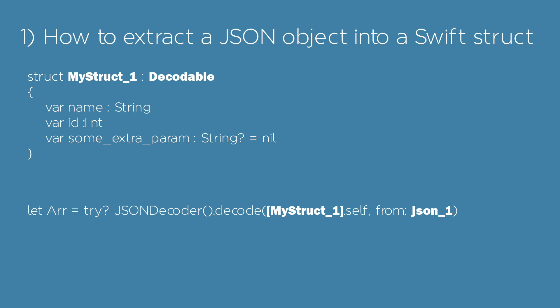Call now the decoder by passing the JSON data and the struct type. In this case, we have an array defined by a custom struct, so we need to use the square brackets.